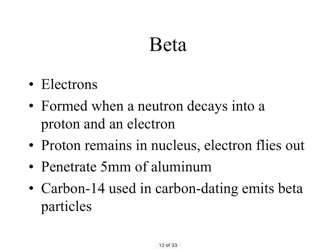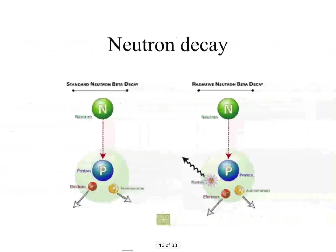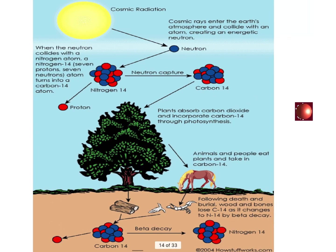The next type of radiation is beta radiation. Beta particles are high-speed electrons flying out of the nucleus. They're formed when a neutron in the nucleus decays into a proton and an electron — the proton stays in the nucleus and the electron flies out. Beta is more penetrating than alpha; it needs five millimetres of aluminium to stop it. Carbon-14 is an example of an element that emits beta particles.